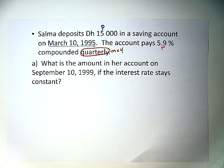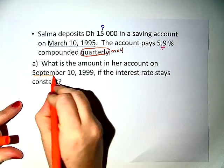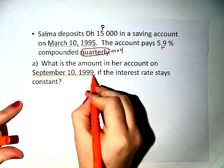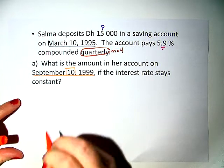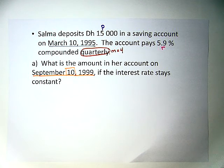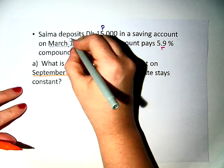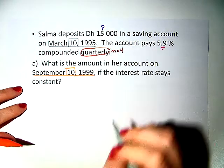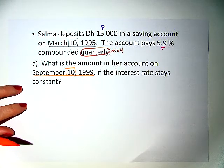What is the amount in her account on September 10, 1999 — and pay attention to the 10th — if the interest rate stays constant? First, in order to do this, we are going to need to figure out the amount of time between these two dates. Because they both have a 10 in them, 10th to 10th, we can actually just look at months.